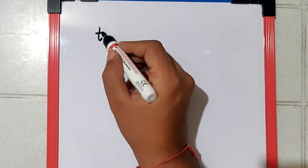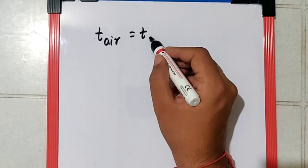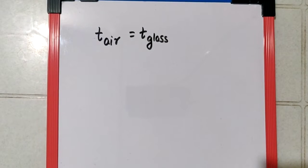Now they say the time taken in air is equal to the time taken in the glass slab. We know velocity is distance upon time, so time is distance upon velocity.